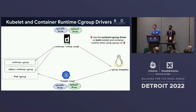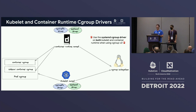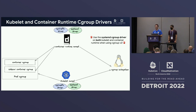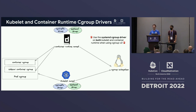Cgroup drivers are a somewhat misunderstood concept. Two components interact with cgroups: Kubelet owns pod cgroups, and the container runtime owns container cgroups. There are two APIs: cgroupfs (talking directly to the kernel) and the systemd driver (talking to systemd first, which then sets values in cgroupfs). Cgroup V2 requires only one process managing cgroups at any given level. Since systemd owns that responsibility by default in every distro, we strongly recommend using the systemd cgroup driver on both Kubelet and container runtime when using cgroup V2. They must match.